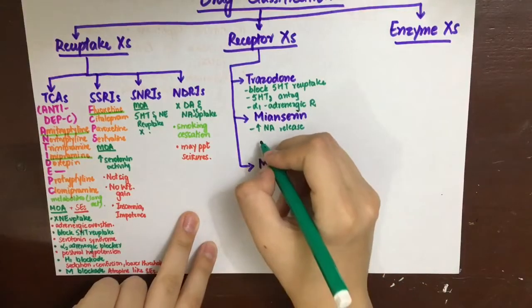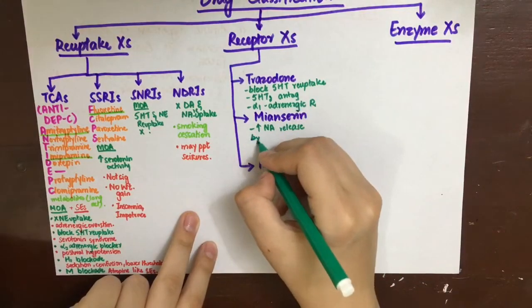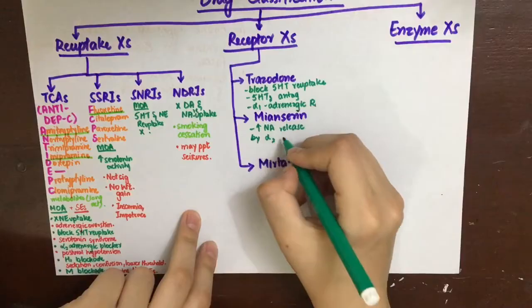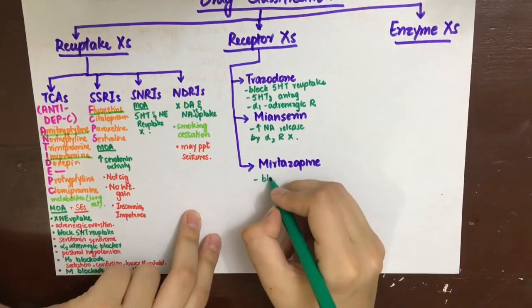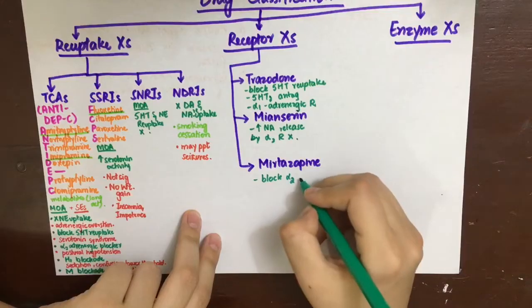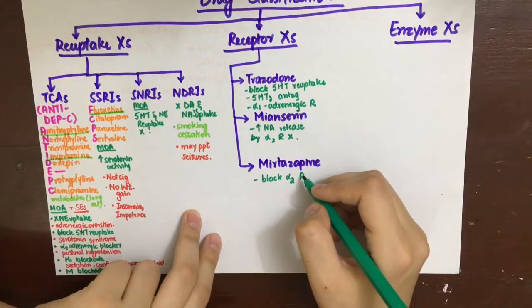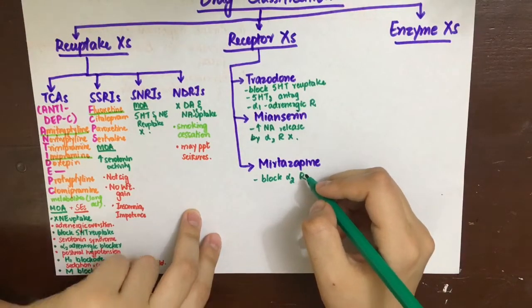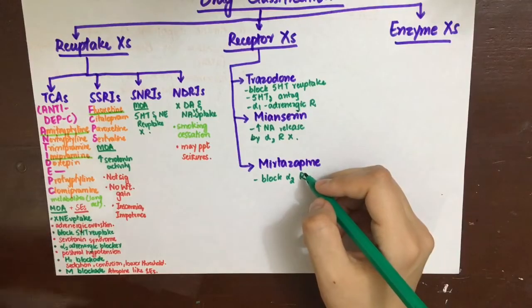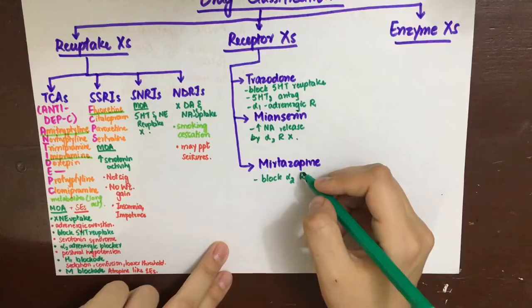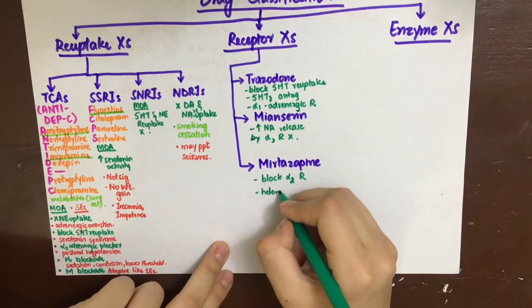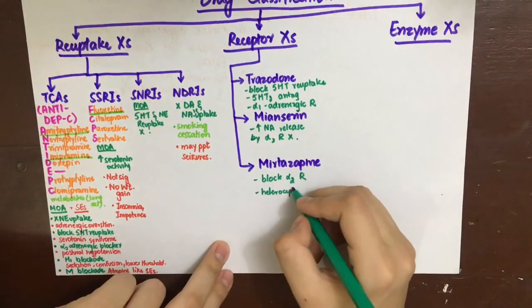Next, meansirin is going to increase noradrenaline release by actually inhibiting alpha-2 receptors. Remember, all of these drugs that are precipitating seizures, that's because they are increasing synaptic levels of neurotransmitters. That is, they are providing a pathway for seizures to propagate. Meansirin will also cause seizures by increasing noradrenaline release by blocking alpha-2 receptors.